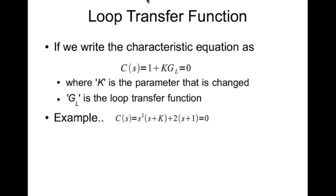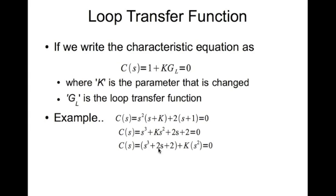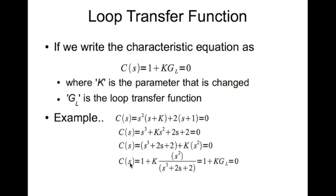For example, if I have C of s as s squared times (s plus k) plus 2 times (s plus 1) equal to 0, I multiply that out and gather all the terms that have k and those that don't have k together. Dividing the terms with k by those without k — in this case s squared by (s squared plus 2s plus 2) — gives the characteristic equation in the form 1 plus k times s squared divided by (s squared plus 2s plus 2). So g_L is s squared divided by (s squared plus 2s plus 2).